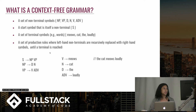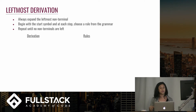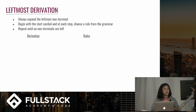I'll go over this more closely in the next slide, but here your start symbol is replaced by NP and VP, and then we find a rule for NP, and we see that needs to be replaced by D and N, and D is 'the' and N is 'cat', and so forth until you get a phrase like 'the cat meows loudly.' This left-hand replacement is known as leftmost derivation — you always expand the leftmost non-terminal. You begin with the start symbol, and at each step you choose a rule from the grammar, and you repeat until no non-terminals are left.